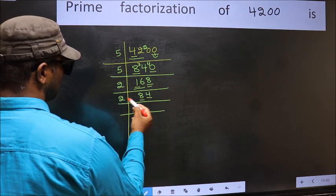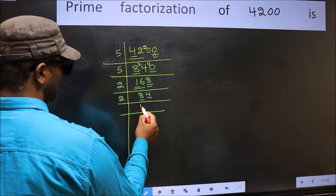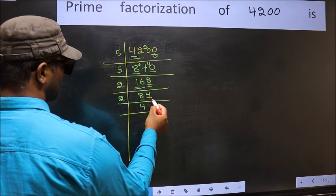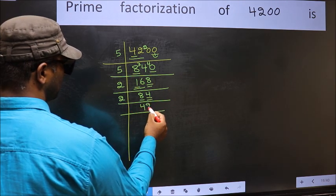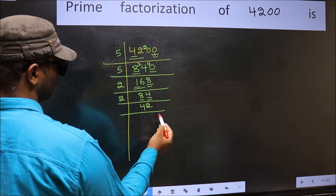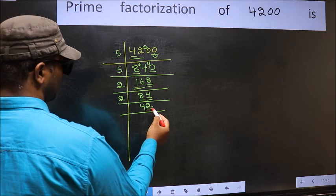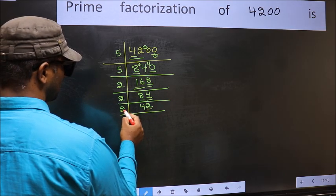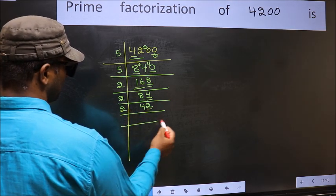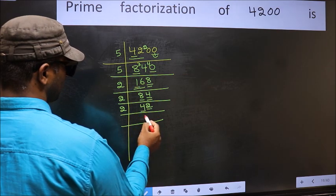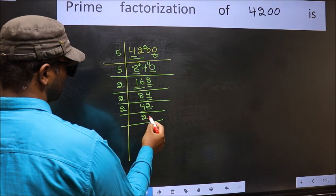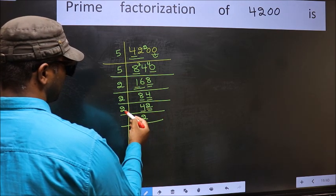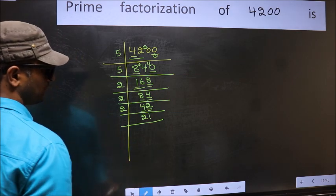The other number is 4. When do we get 4 in the 2 table? 2 twos = 4. Now we have 2, which is even so take 2. First number 4. When do we get 4 in the 2 table? 2 twos = 4. The other number is 2. When do we get 2 in the 2 table? 2 ones = 2.